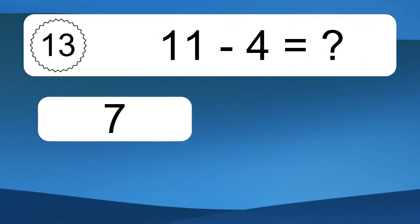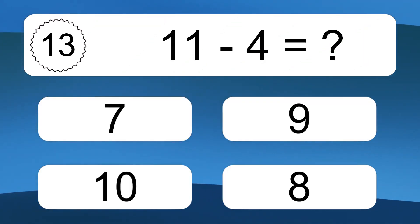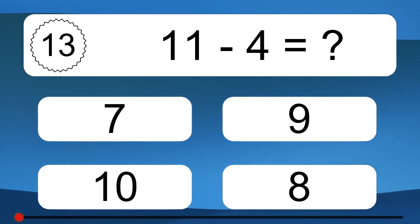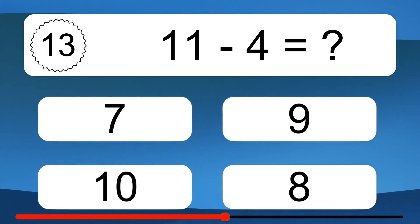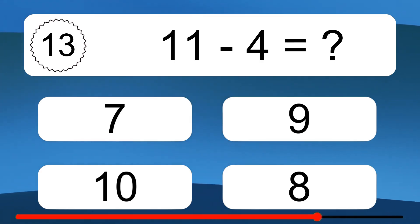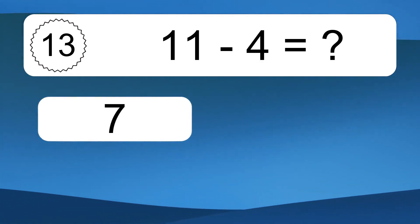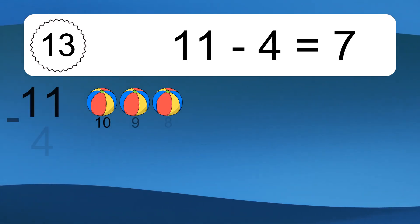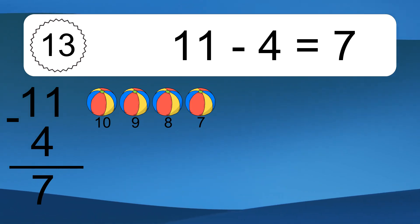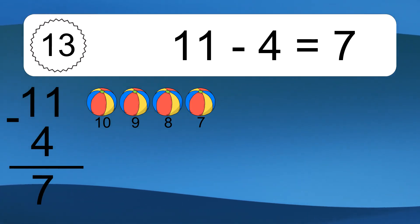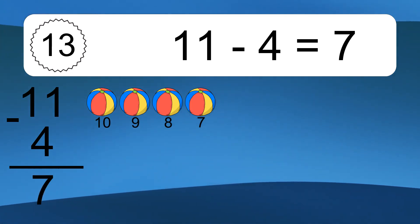11 minus 4 equals what? 11 minus 4 equals 7. Let's count it. 10, 9, 8, 7.